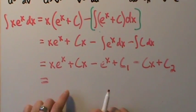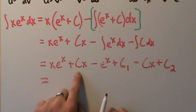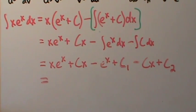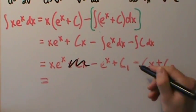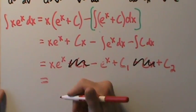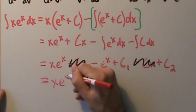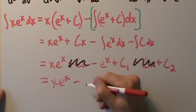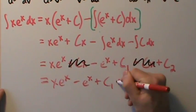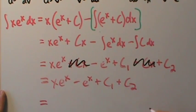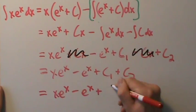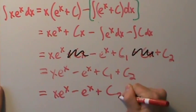So what's next? We have xe to the x plus cx minus cx — notice these cancel: plus cx minus cx. So they do cancel, that's great. What are we left with? xe to the x minus e to the x plus c1 plus c2, which is the exact same thing as saying xe to the x minus e to the x plus some other arbitrary constant we'll call c3. Why? Because c1 and c2 are both arbitrary constants, and if you add two arbitrary constants, you get another arbitrary constant.